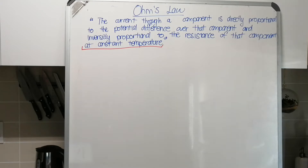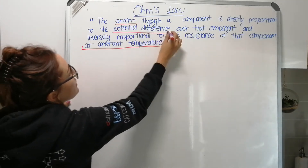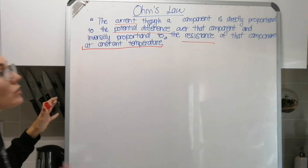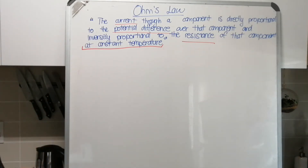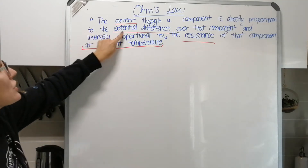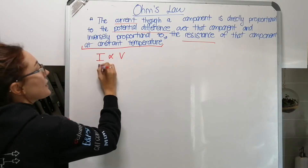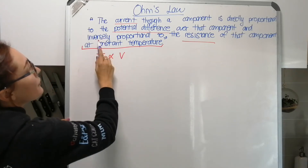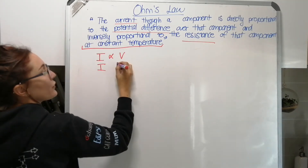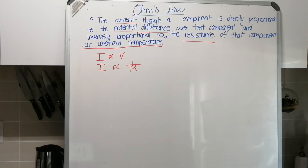A lot of words, but basically mathematically what this means is that we've seen these words - current, potential difference, resistance - and we know what directly proportional and inversely proportional means. Current through a component is directly proportional to the potential difference, and the current is inversely proportional to the resistance. For inverse proportion we just put the resistance at the bottom of a fraction. So current is directly proportional to potential difference and inversely proportional to resistance.